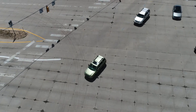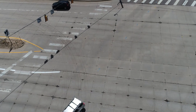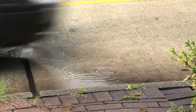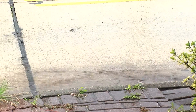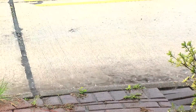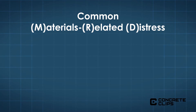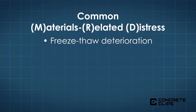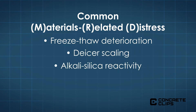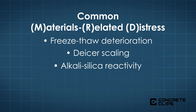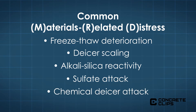Materials related distresses can compromise concrete durability. The mechanisms that cause materials related distresses can be physical or chemical. The most common materials related distress mechanisms that affect pavements include freeze-thaw deterioration of the hydrated cement paste or the aggregate, de-icer scaling of the concrete surface, alkali silica reactivity, sulfate attack, and chemical de-icer attack.